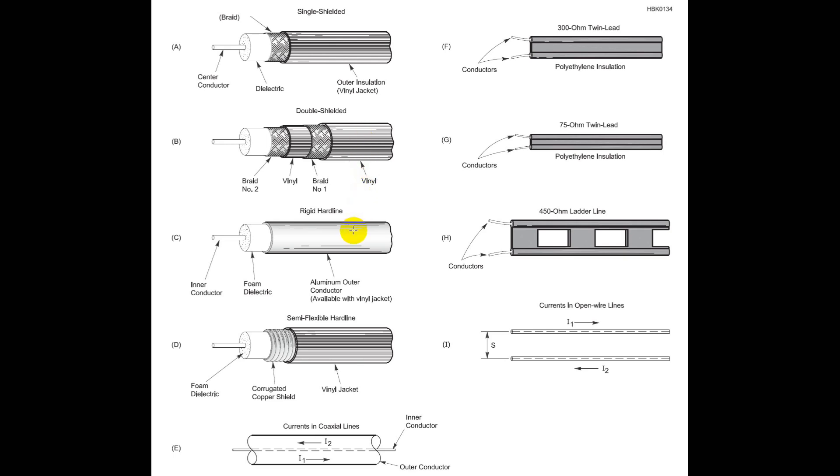Now we're getting exotic here. This is an inner conductor with a foam dielectric and aluminum outer conductor. This is all aluminum. And notice it has some thickness to it. This is an aluminum outer conductor, and you can get it with a vinyl jacket. This is rigid hard line. It's very difficult to bend. You almost need to get a professional to do this.